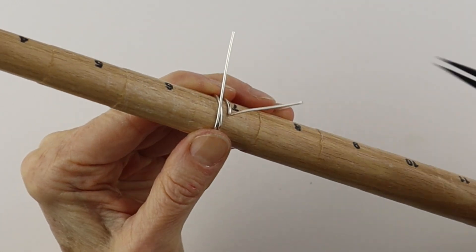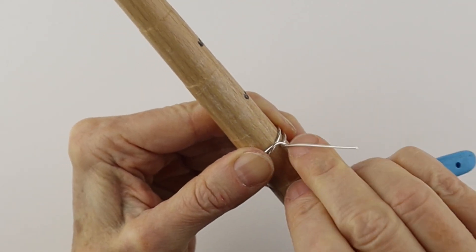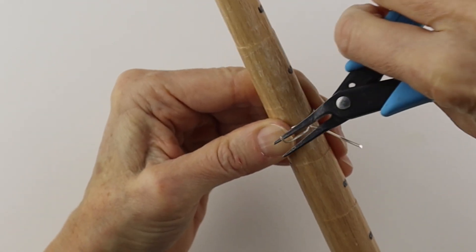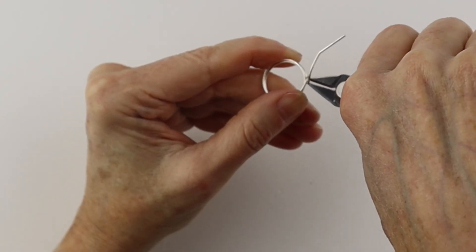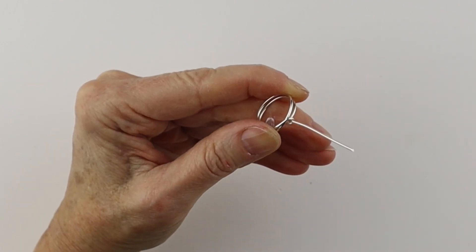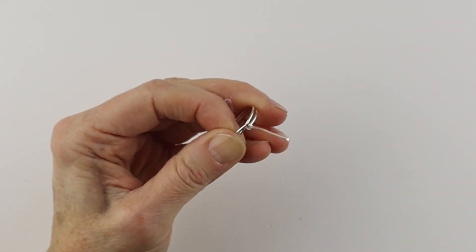And then we'll just hold it, take the end and wind it around, pull it with the pliers. Remove it, clip that, pinch it in so it's flush. Give it a pinch with the tweezer nose pliers.